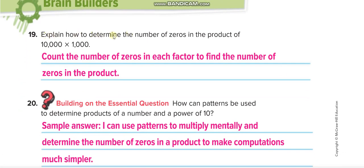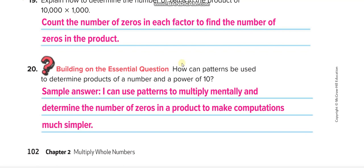To determine the number of zeros in the product of ten thousand times one thousand: count the zeros in each factor — four plus three equals seven zeros — so the product has seven zeros, since one times one equals one. Patterns can be used to determine products of a number and a power of ten. We can multiply mentally by removing the zeros, multiplying the remaining numbers, and putting the zeros back to make computations much simpler.